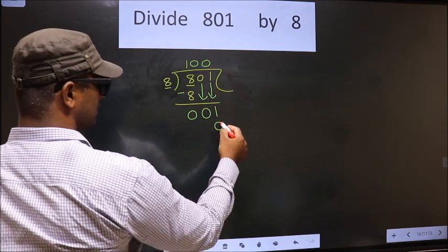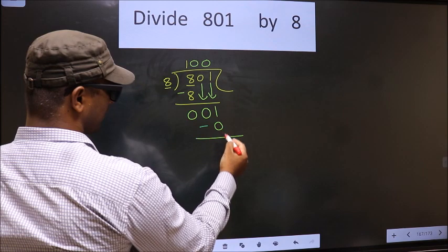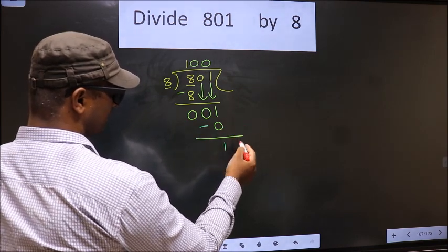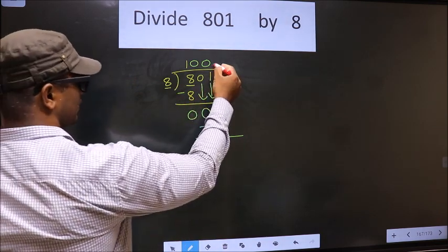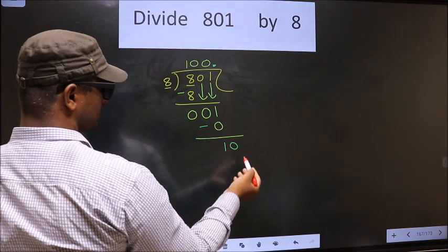So 8 into 0, 0. Now you subtract 1 minus 0, 1. Over here we did not bring any number down, and 1 is smaller than 8. So now you can put a dot, take 0 here. So 10.